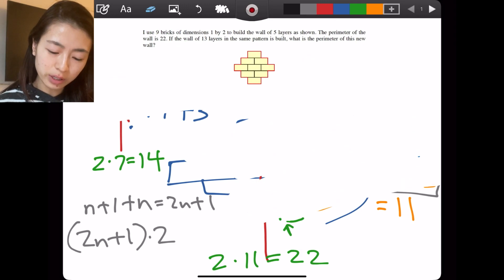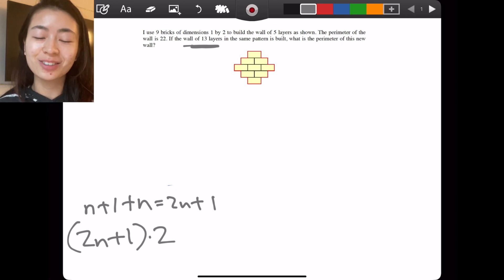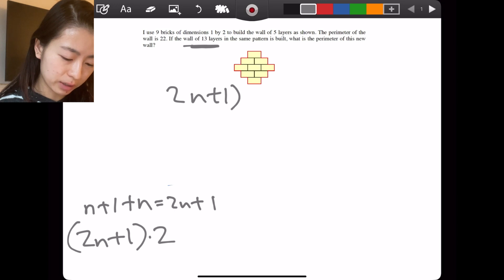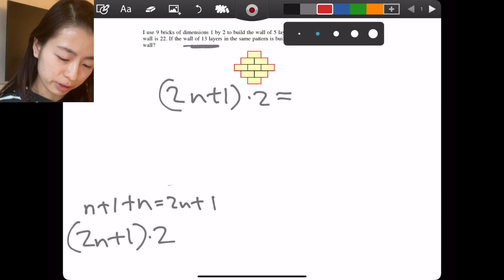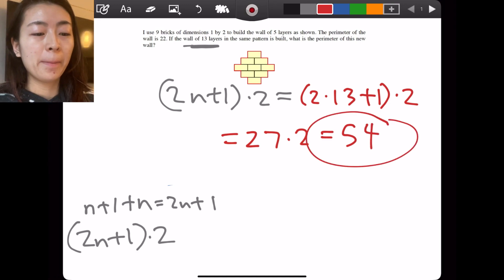Therefore, if we go into the original problem, which asks us what the perimeter is, if n is 13, because there are 13 layers, all we do is plug it into the formula that we found. This means we don't have to draw out all 13 layers. We use our problem solving skills to find a pattern ourselves, such that we can really derive an equation that suits any n that the problem throws at you. So 2n plus 1 times 2, if we plug in the 13, that will become 27 times 2, which is 54. And I'm going to look at the answer now. Yeah, we got it right, guys. 54. Good job.